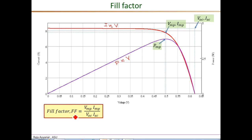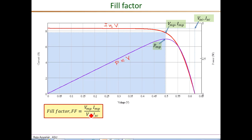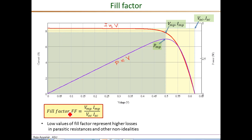A metric called the fill factor, denoted FF, is defined as the ratio of the actual maximum power — VMP times IMP — to the power represented by the theoretical point, which is VOC times ISC. So FF = (VMP × IMP) / (VOC × ISC), and a higher fill factor means a better PV cell design. The fill factor can also be visualized as the ratio of the blue rectangle enclosing the point VMP, IMP to the yellow rectangle enclosing the theoretical point VOC, ISC. Low values of fill factor represent higher losses in parasitic resistances and diode non-idealities.